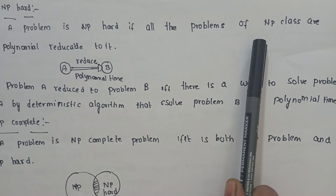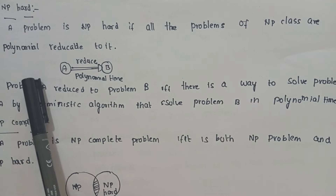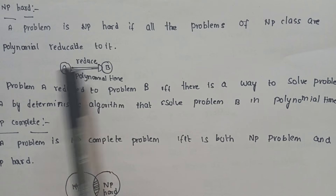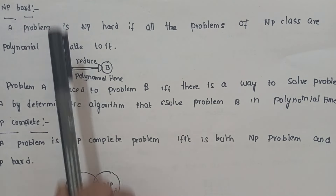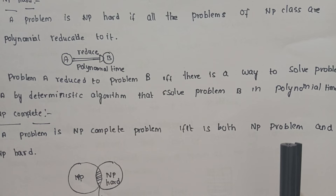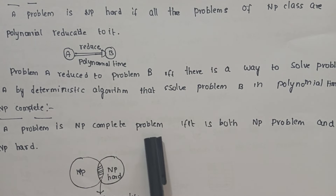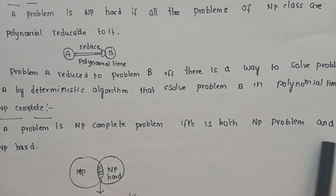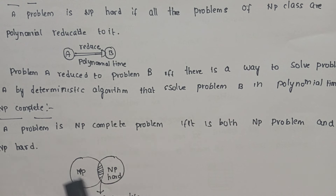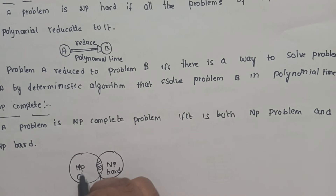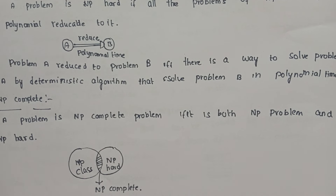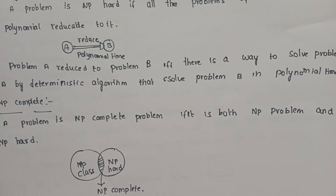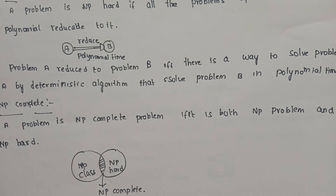A problem is NP complete if it is both an NP hard problem and an NP class problem. So, a problem that is both NP hard and in the NP class is called NP complete. These are the four problem classifications.